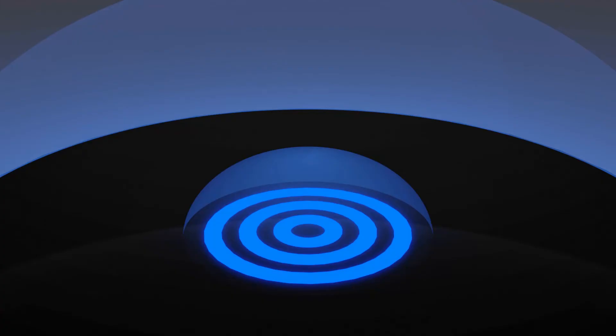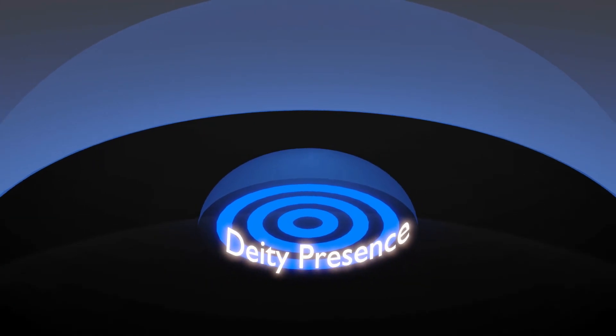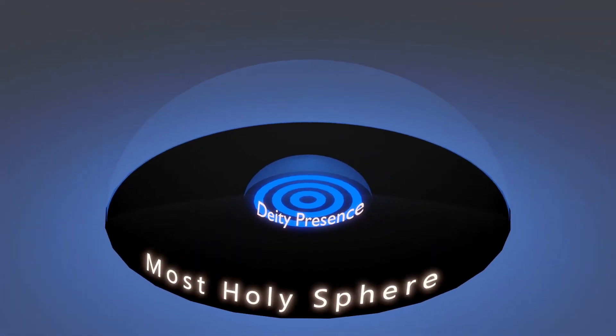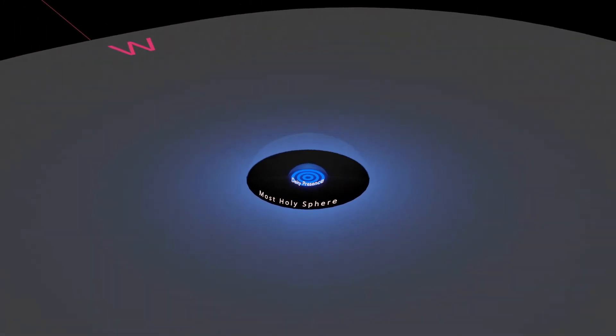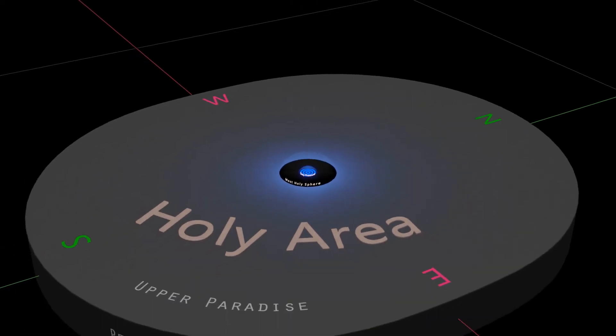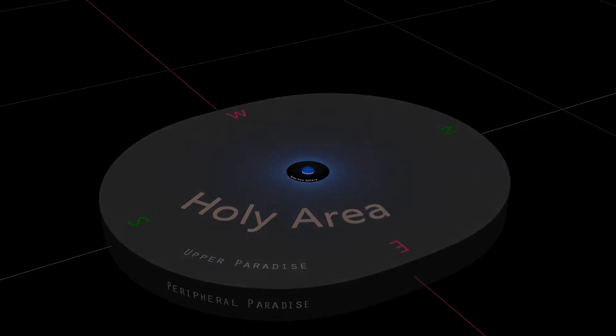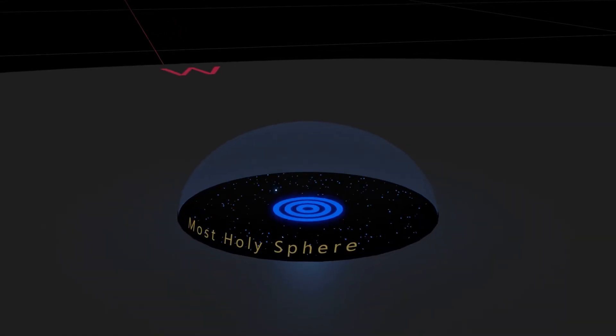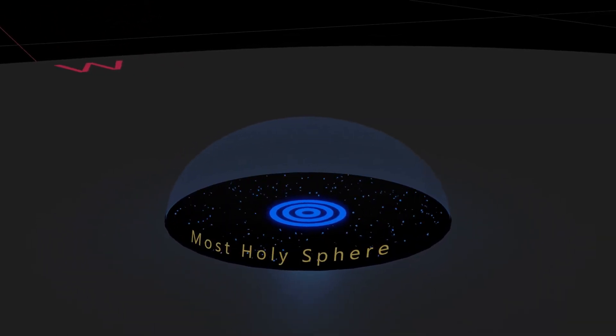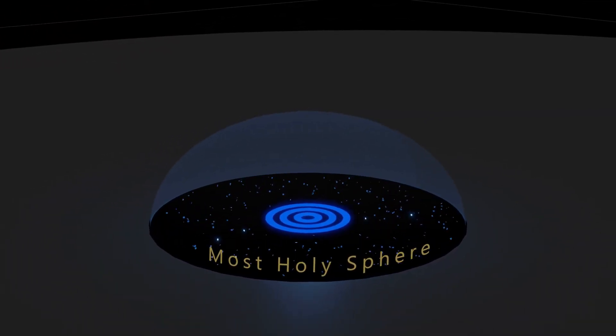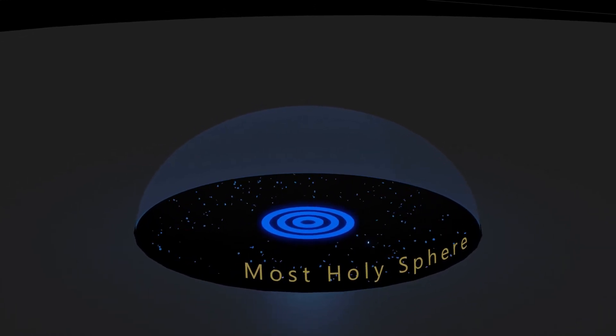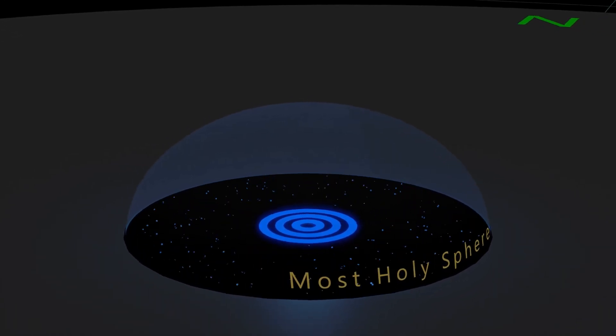On upper Paradise there are three grand spheres of activity: the deity presence, the most holy sphere, and the holy area. The vast region immediately surrounding the presence of the deities is set aside as the most holy sphere and is reserved for the functions of worship, trinitization, and high spiritual attainment.